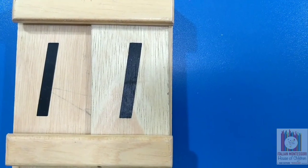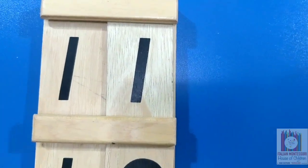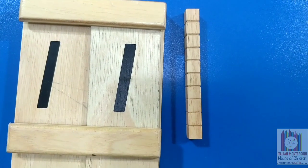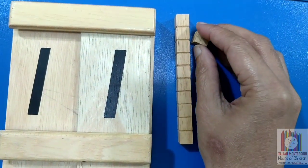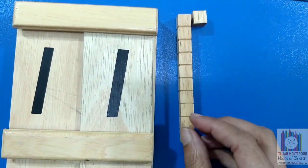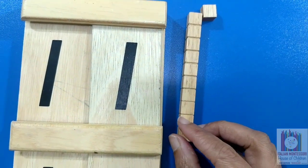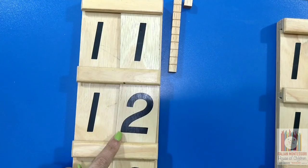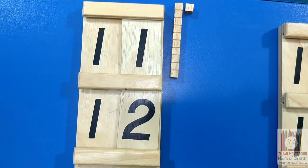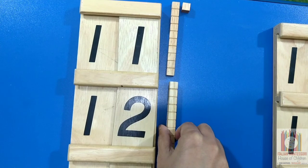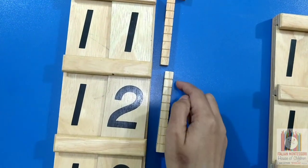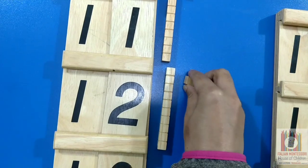The student may also place a 10 bead bar and the corresponding number of units to create the quantity that matches each of the numbers in the second board. This is 11. This is 12. Let's make number 12 with these beads. This is bar of 10.